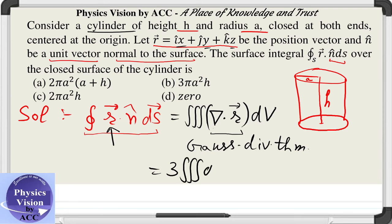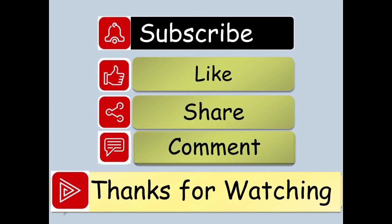You can calculate it in terms of cylindrical coordinates, but as we know, the volume of this cylinder is given by πa²h. Since we multiply by 3, this gives 3πa²h. Hence option b is the correct answer to this question. Stay tuned with us and thanks for watching.